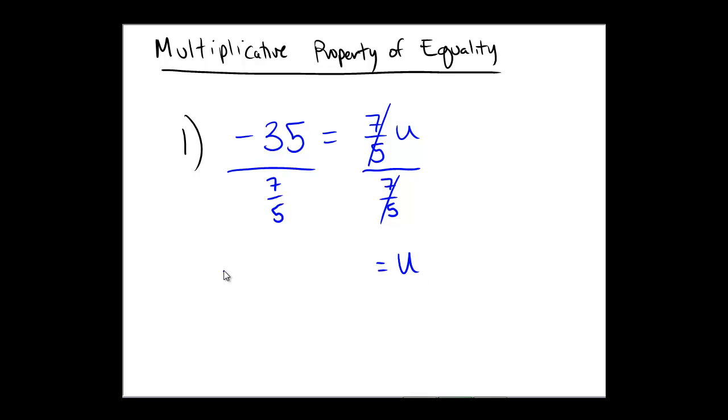But on the left-hand side, we now have negative 35, and that's being divided by 7 fifths. Recall that dividing by a fraction is equivalent to multiplication by the reciprocal. So instead of writing down divide by 7 fifths, I'm going to write it as multiply by 5 sevenths. Instead of having a complex fraction, we now have a multiplication problem.